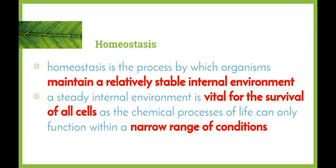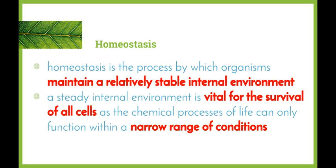Enzymes are responsible for controlling all the metabolic activities within cells, and they will only operate within a limited range of temperature and acidity. So we need homeostasis to happen in order to make sure that those ranges are maintained. Homeostasis is the process by which organisms maintain a relatively stable internal environment. A steady internal environment is vital for the survival of all cells, as the chemical processes of life can only function within a narrow range of conditions.